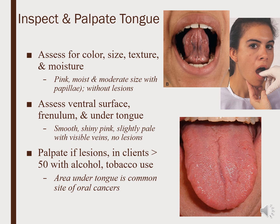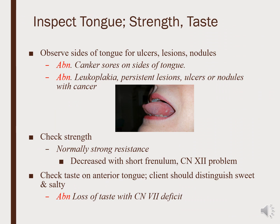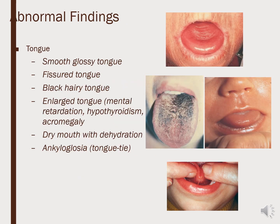We inspect and palpate the tongue for color, size, and adherence, looking for it to be deep pink, moist, and without lesions. We always look under the tongue for any cancerous lesions. We assess tongue strength and taste, testing cranial nerve 12 by having the patient press the tongue into the side of the cheek while the examiner provides resistance on the outside. We expect strong resistance on both sides. Abnormal findings include an enlarged tongue or very dry mouth from poor hydration.